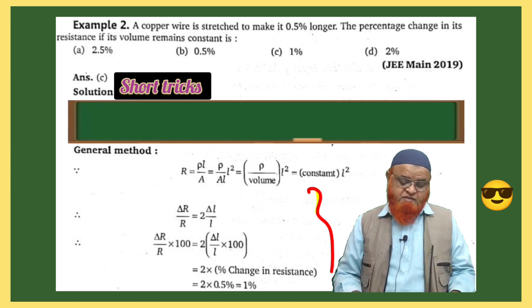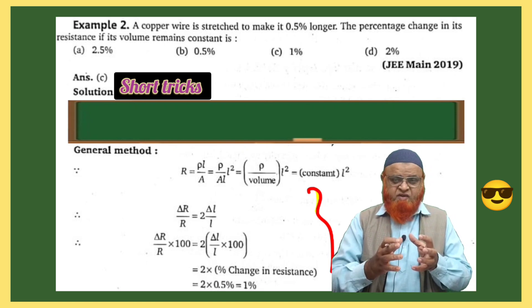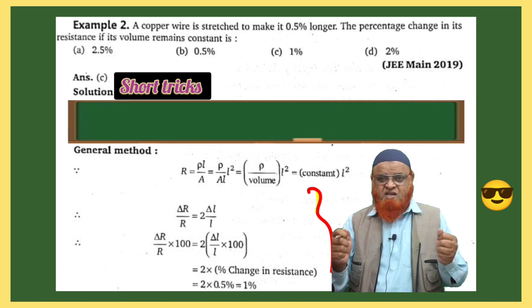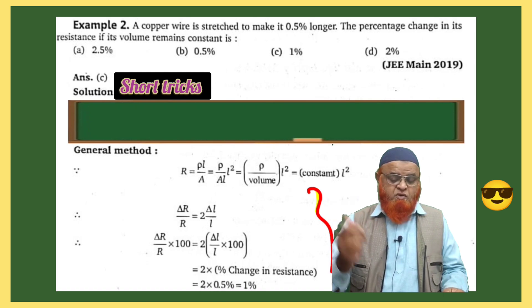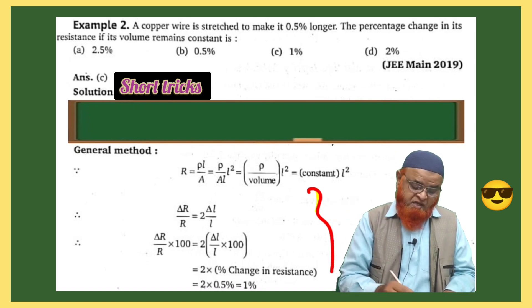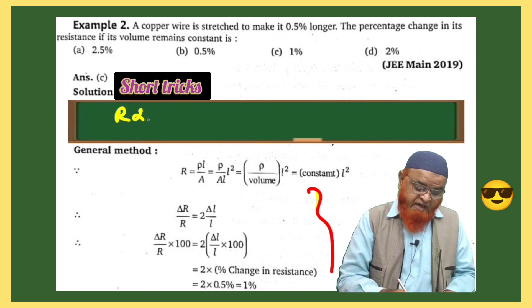You all know that when a wire is stretched, its resistance becomes directly proportional to l square. You all know about this. So what I mean to say here is resistance is directly proportional to l square.